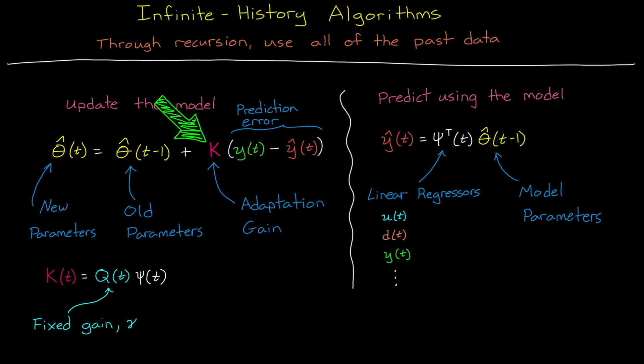One way is to just set the gain equation to a fixed value Q, multiplied by the regression vector. With this, each time step, the error between the prediction and the measurement is scaled by a fixed amount, proportional to the gradient of the linear system, and then that is added to the old parameters.